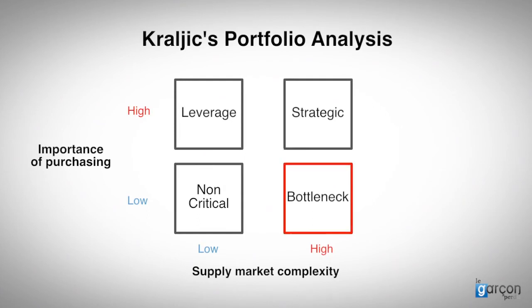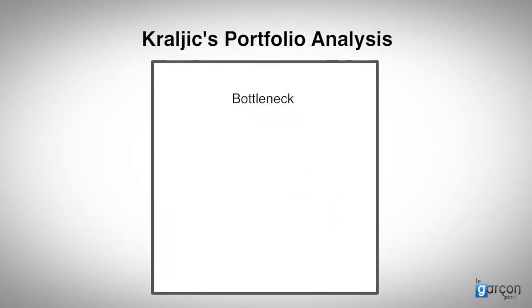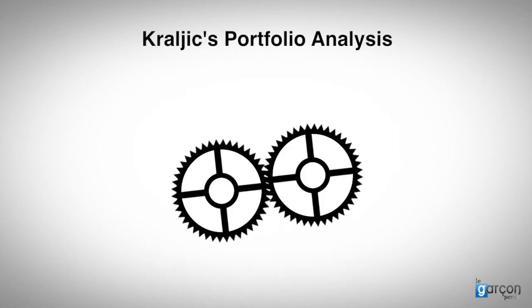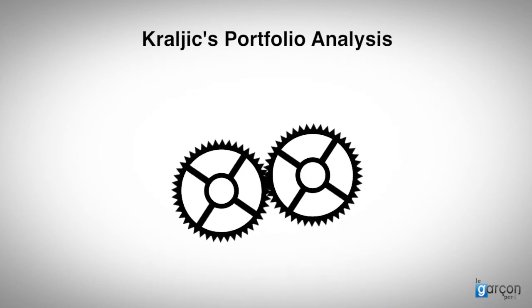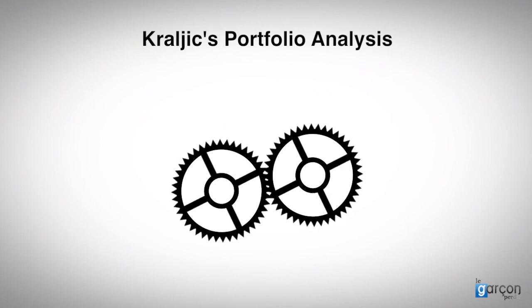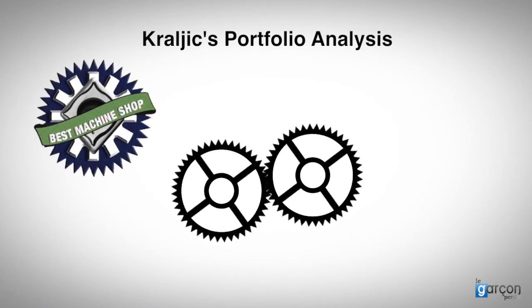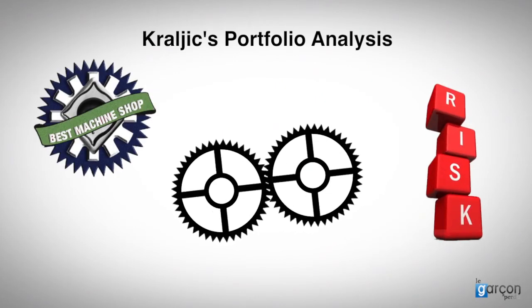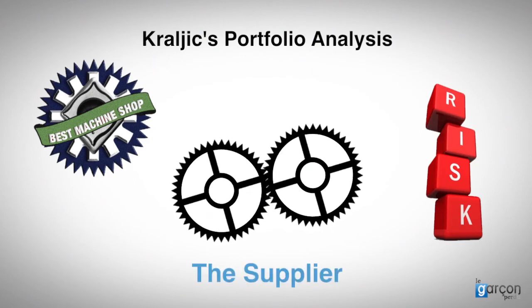Let's move on to talk about the bottleneck quadrant. The categories in this quadrant often represent a significant risk to the buying organisation, and it's common for the balance of power to favour the supplier. For example, we may buy spare parts for a key machine. How many sources do we have? One. What are the implications of non-performance? High. Who has the balance of power? The supplier.